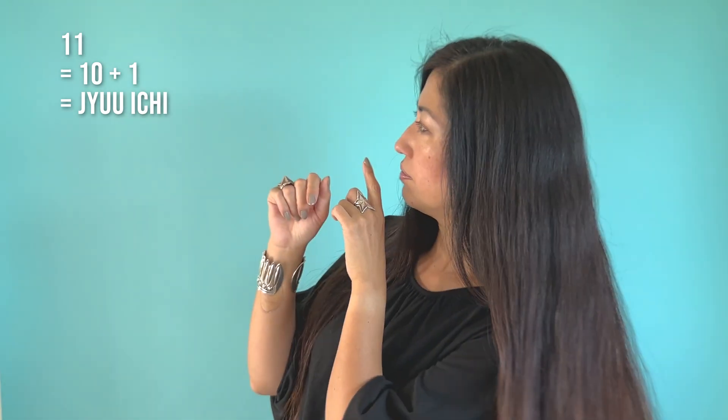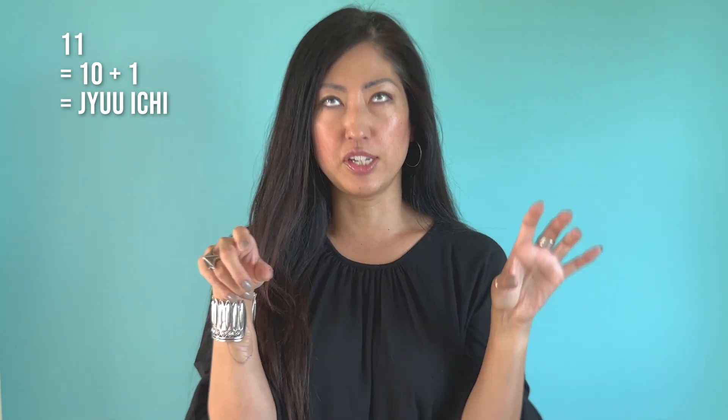From after ten, it's written as one-ten, right? So the ten is just juu, and ichi is the first digit. So juu ichi — and then juu ni, juu san, juu yon, juu go, juu roku, juu shichi, juu hachi, juu kyuu, ni-juu. You just read in order of the number.